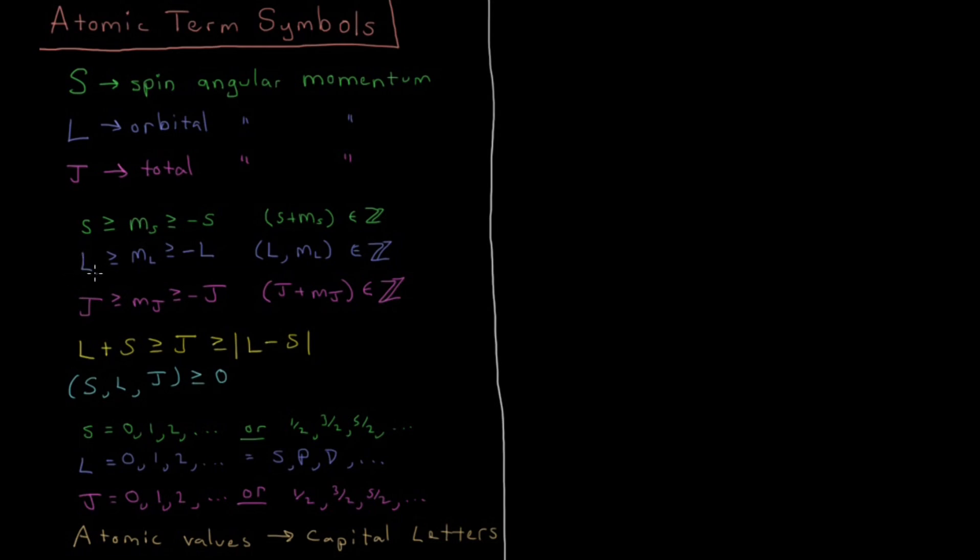Similarly, L has just integer values. L can be 0, 1, 2, 3, etc., starting at 0 and going up. And then you're going to have 2l plus 1 values of m sub l, which are similarly going to go from l to minus l in terms of all integers in between.